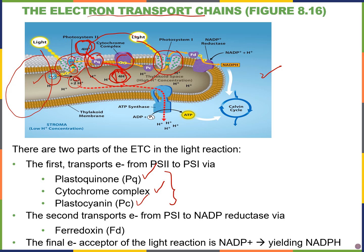Those electrons continue and enter photosystem 1, where something similar happens. Photosystem 1 absorbs more light, the chlorophyll a electrons are excited again, and those electrons pass through the second electron transport chain. Electrons are first passed to ferredoxin, then to NADP reductase. The final electron acceptor is NADP+, which accepts those electrons along with a proton to generate our high energy electron carrier, NADPH.